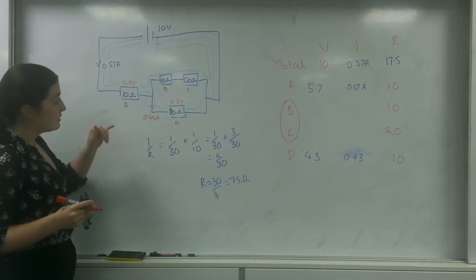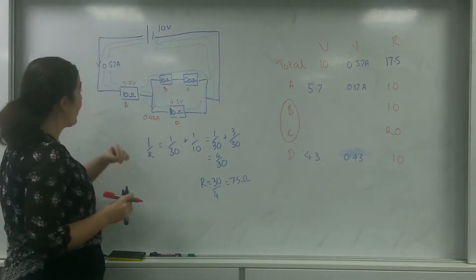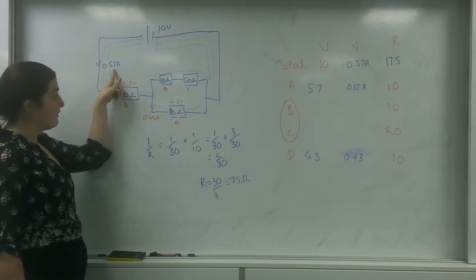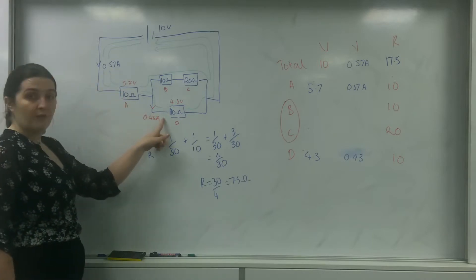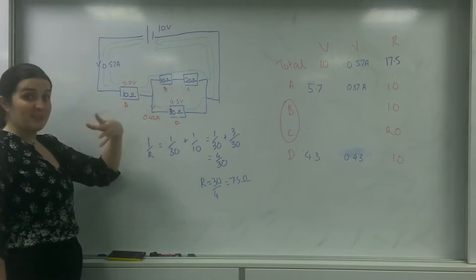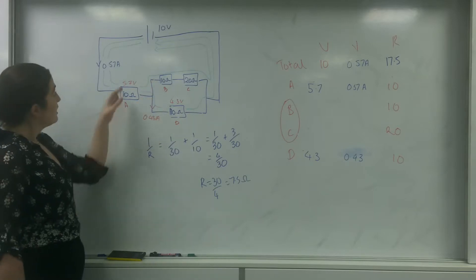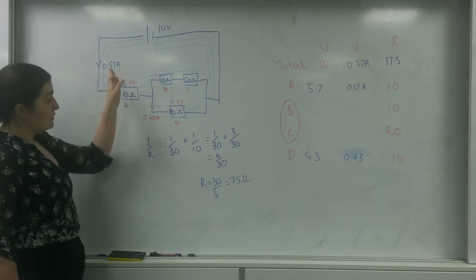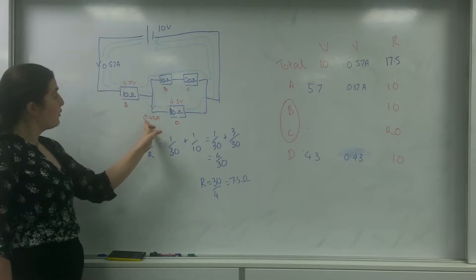Which means, using Kirchhoff's first law, the current law, if this is 0.57 and this is 0.43, I know whatever's going through here must be the difference. It must be whatever's left. So 0.57 take away 0.43 is 0.14.